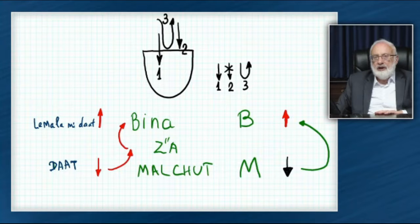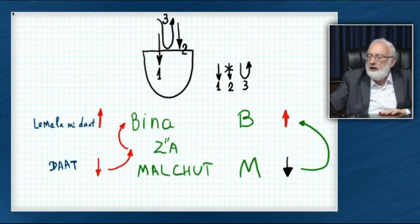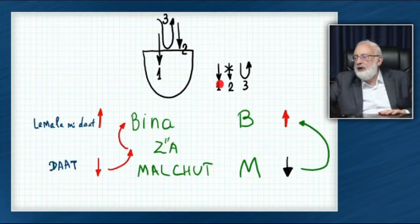But what I want to say here is something simple. That the first thing that we have is our ordinary will to receive, where everyone just wants to receive, wanting to fulfill themselves.